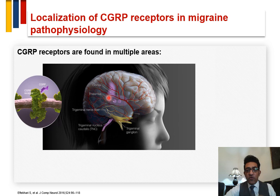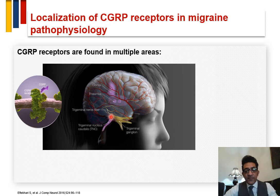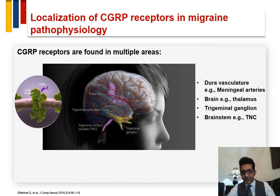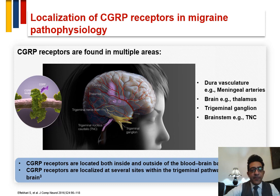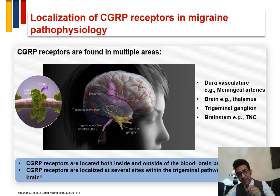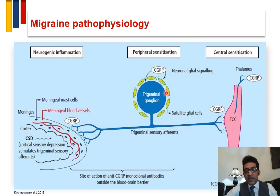CGRP receptors are involved in multiple areas of the brain — around the trigeminal ganglion, around the peripheral terminals of the trigeminal nerves, around the thalamus and cortex, and in the brainstem. Because of this distribution, CGRP is an important target for treating migraine, both peripherally and centrally.